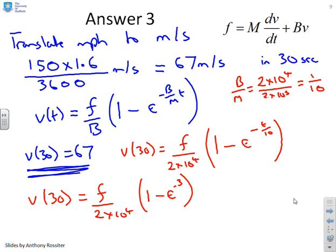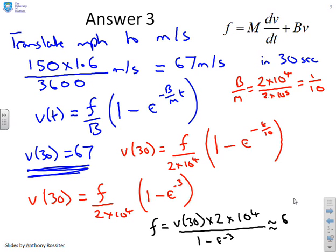So V of 30 equals F over 2 times 10 to the 4 into 1 minus E to the minus 3. So finally if we want to solve for F, I'll use a different colour here. What we've got is F equals V of 30 times 2 times 10 to the 4 over 1 minus E to the minus 3. And if I approximate this, you've got roughly 67 times 2 times 10 to the 4 over 0.95. So that gives you an idea of the engine force required to meet your specification. And again you'll notice we use the things we know about a first order system in order to derive these answers.